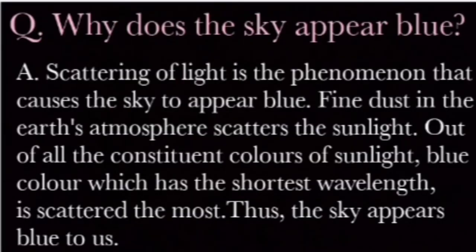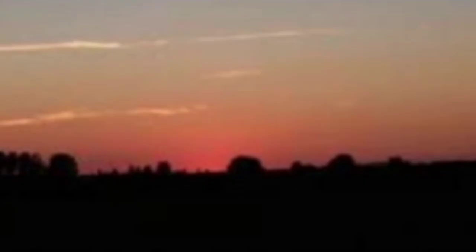So now we are ready to answer the question - why does the sky appear blue? Scattering of light is a phenomenon that causes the sky to appear blue. Fine dust in the earth's atmosphere scatters the sunlight. Out of all the constituent colors of sunlight, blue color which has the shortest wavelength is scattered the most. Thus the sky appears blue.